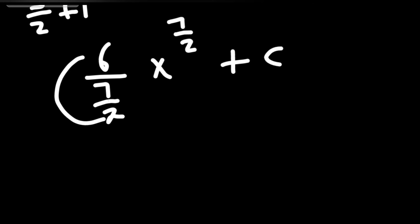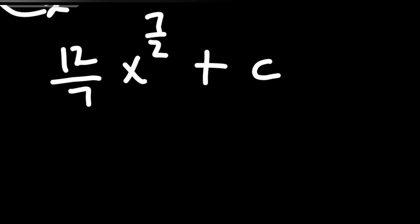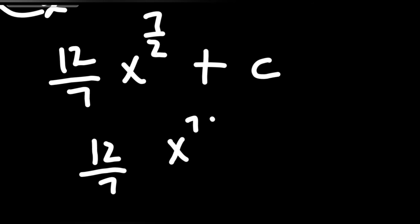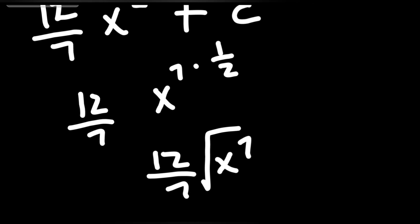Simplifying 6 over (7/2) gives 12/7. So the result is 12/7 times x^(7/2) plus C. This can be rewritten as 12/7 times x^7 to the power of 1/2, which equals 12/7 times the square root of x^7, plus C.